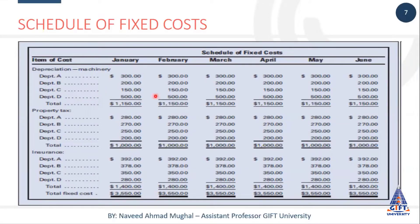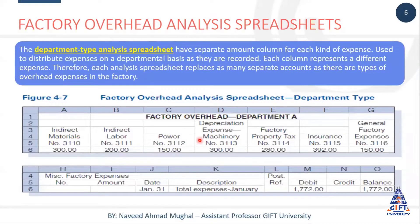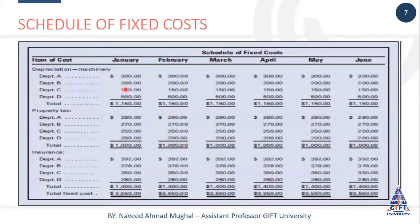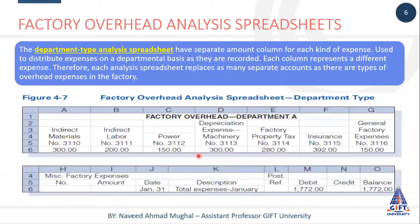Aur wo departmental sheet ke andar - jo maine aapko yahan pe - woh aapke samne nazar aa rahi hai. Jaise depreciation expense jo hai, department A ka 300 hai. Toh aap zara gaur karein - department A ka depreciation 300 hai. So these are interrelated documents, aur ek document ki jo information hai woh doosre document mein replicate hoti hai.